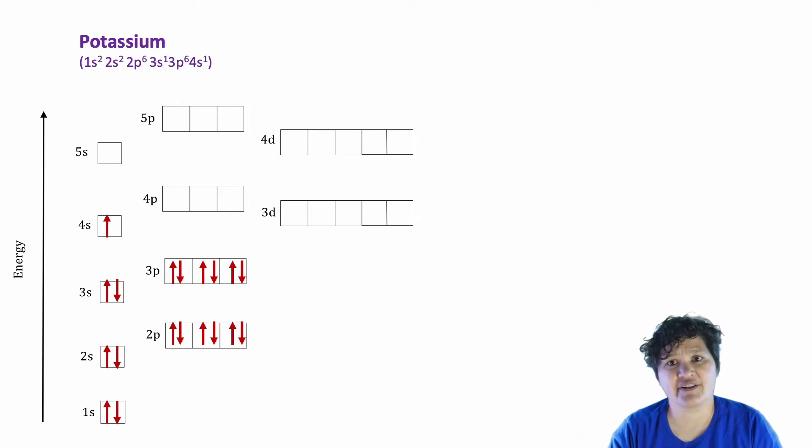The Aufbau principle said that you had to start filling in the lowest energy level before filling in the next highest energy level. Now, it's not that you can't fill in higher energy levels. Rather, if you put an electron in a higher energy level, it will naturally fall down to a lower energy level. Now remember also that each of these orbitals represented in an electron configuration diagram has a discrete energy associated with it.